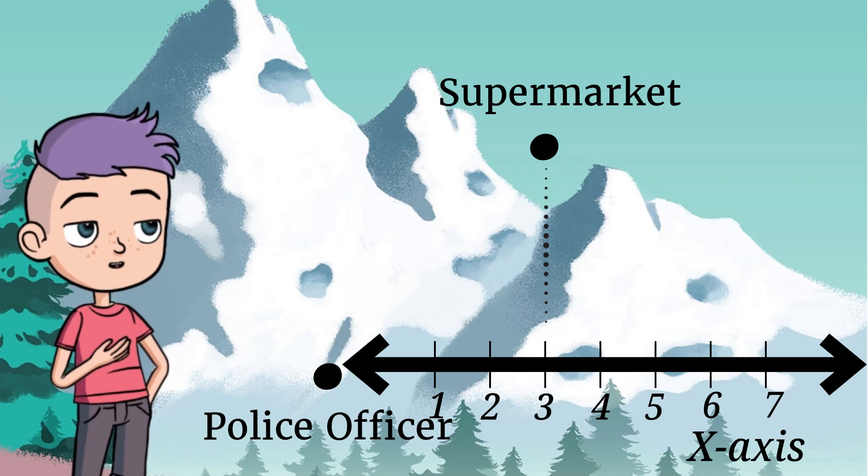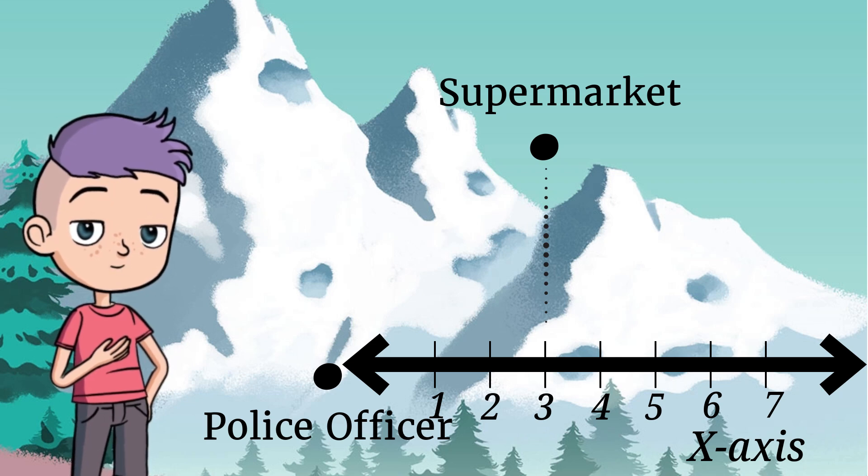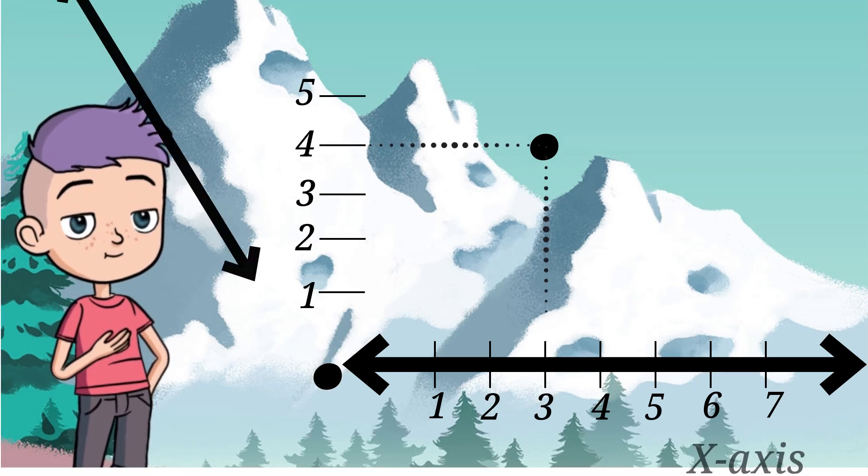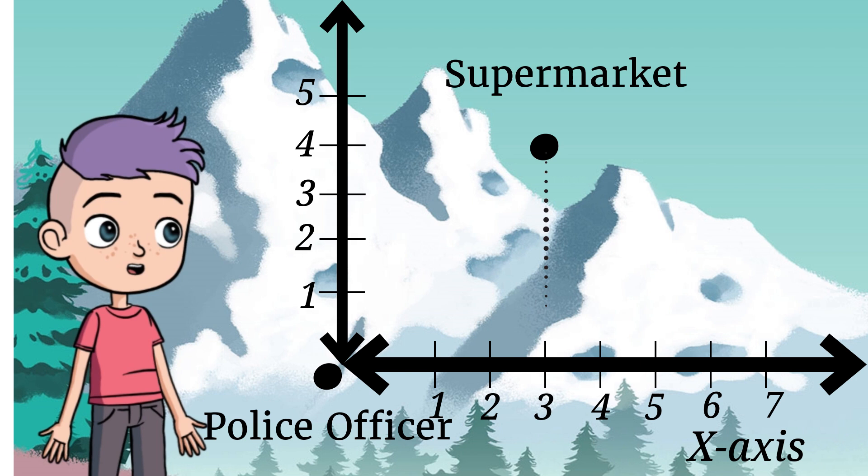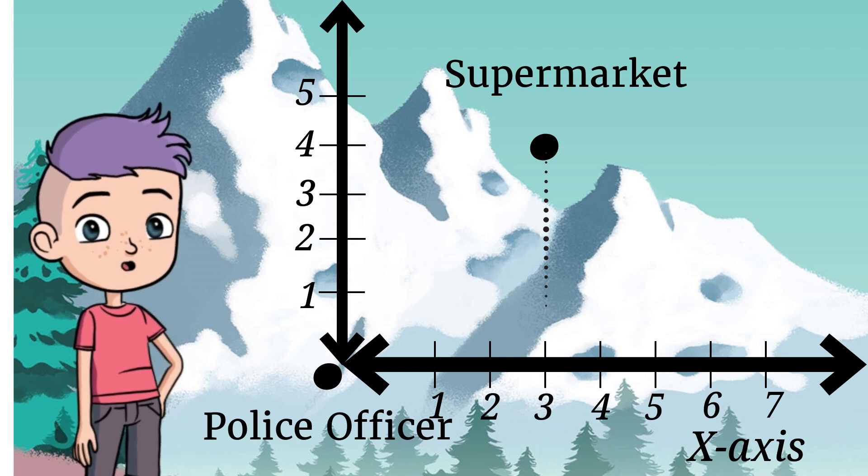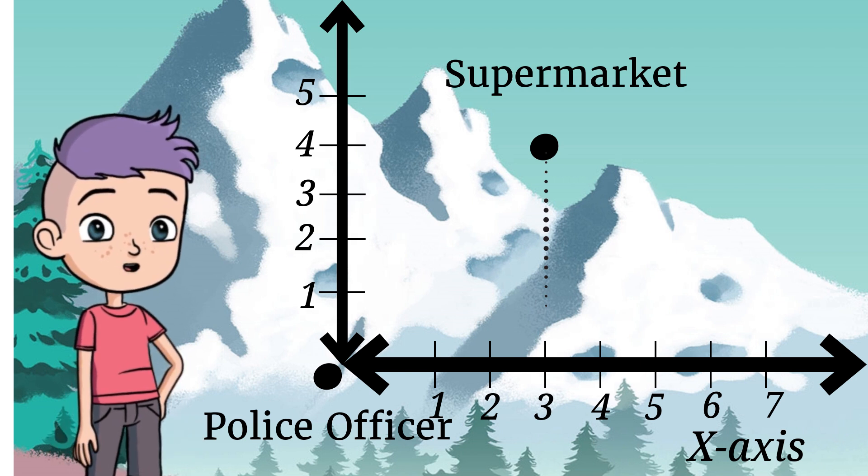We also need to know the vertical distance. We flip the number line to make it vertical. This creates a coordinate plane. These two intersecting lines break the grid up into quadrants. Today we are only looking at one quadrant.